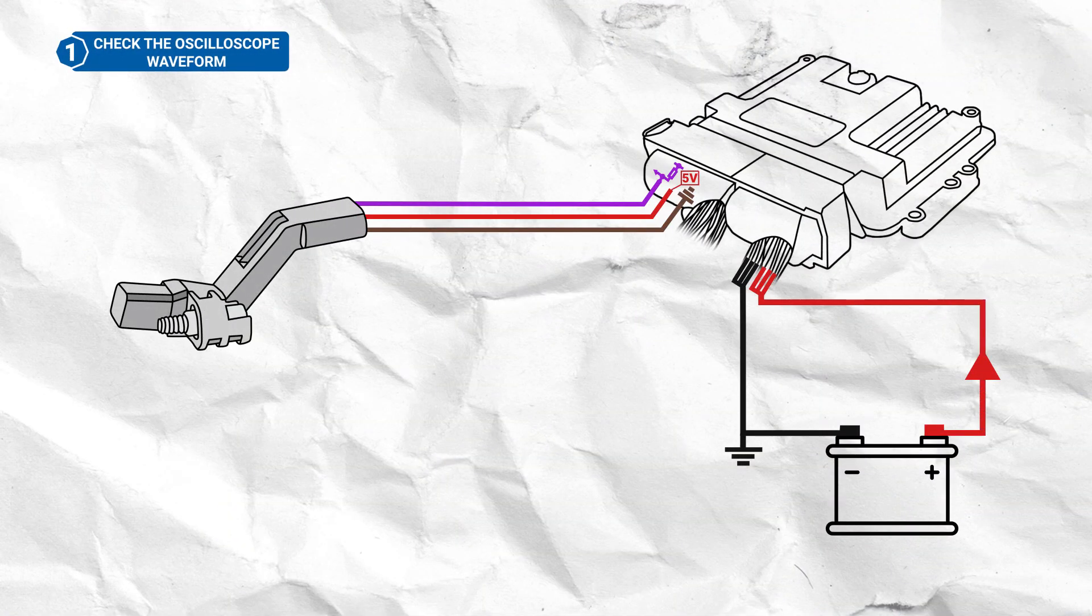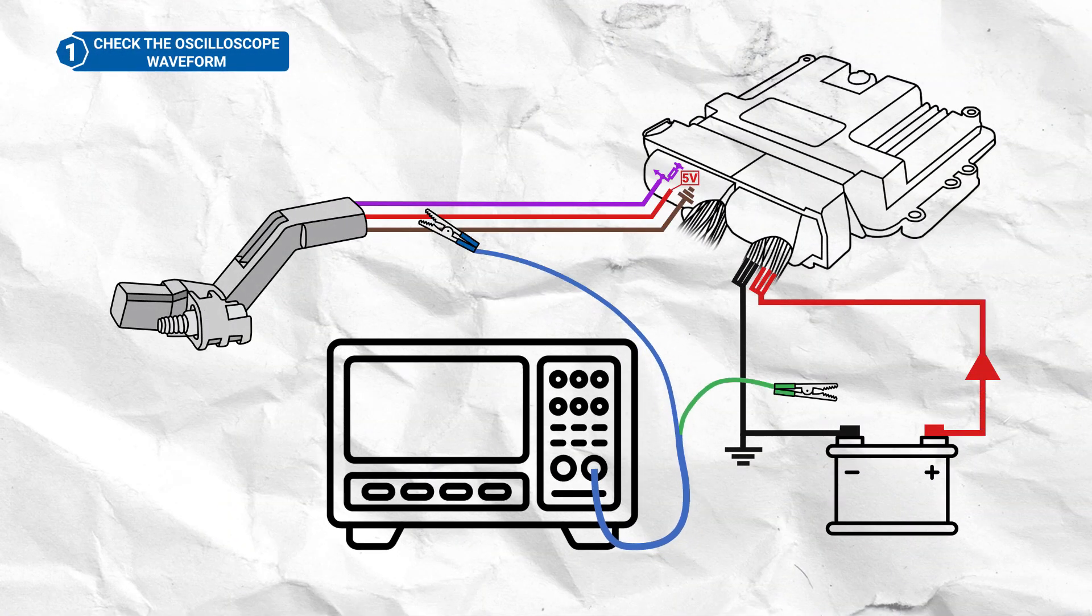To view this waveform, hook up an oscilloscope to the signal wire at the sensor connector and battery negative, and start or attempt to start the vehicle.